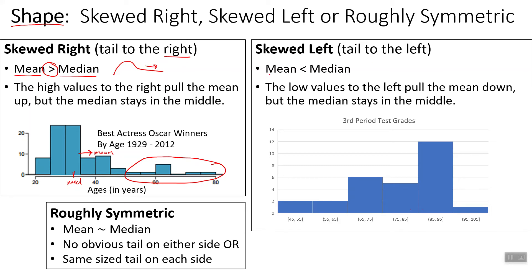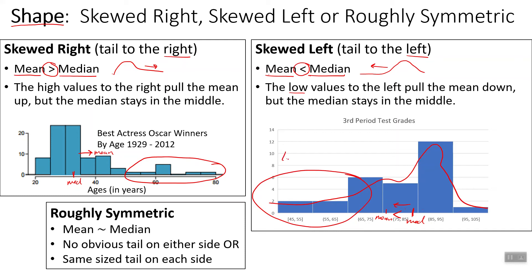Skewed left is the opposite. The mean here is going to be less than the median. Skewed left is going to have a tail to the left, with the rest of the data over to the right side. The low values on the left pull the mean down below the median. So the mean is less than the median — that makes it skewed left. The tail is over towards the left side.